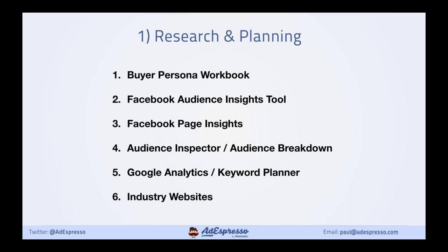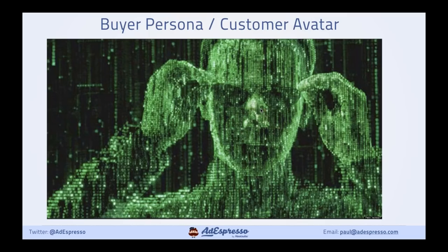So section one: research and planning. We're going to be going through six different tips and tools to help with this. Why are we looking at our customers? I think sometimes as Facebook advertisers we get very carried away — we think about the technical side of things: pixels, algorithms, the learning phase. And we forget that sometimes ads don't work because we're dealing with real human beings. We're showing these ads to humans, not machines, so we really need to get into that mindset. We call this our buyer persona or customer avatar.